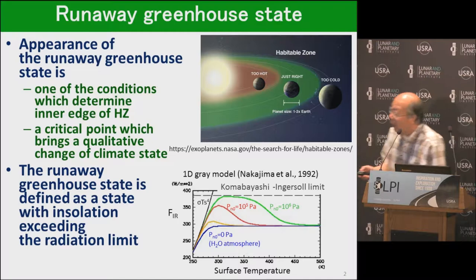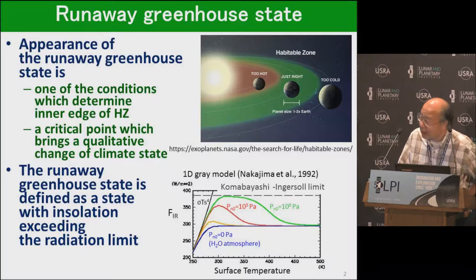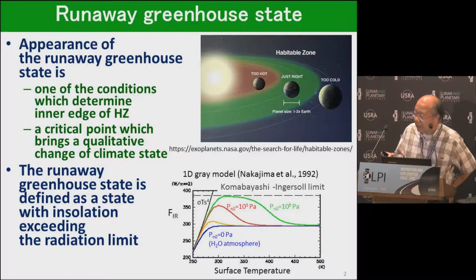The appearance of the runaway greenhouse state is one of the important conditions which determine the inner edge of the habitable zone. When the runaway greenhouse state emerges, atmospheric temperature keeps increasing and the climate changes drastically. So it can be considered to be a critical point in the climate regime.